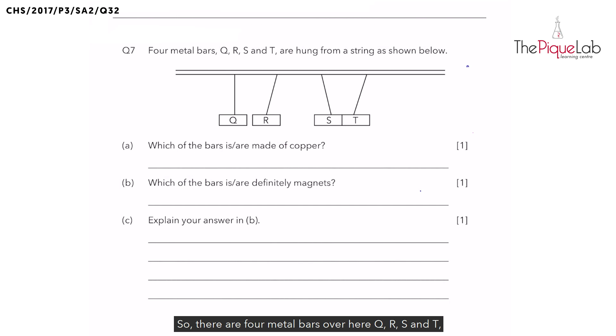So there are four metal bars over here, Q, R, S and T, and they're hung from a string as shown below. As for this question, I would like to focus on part B first.